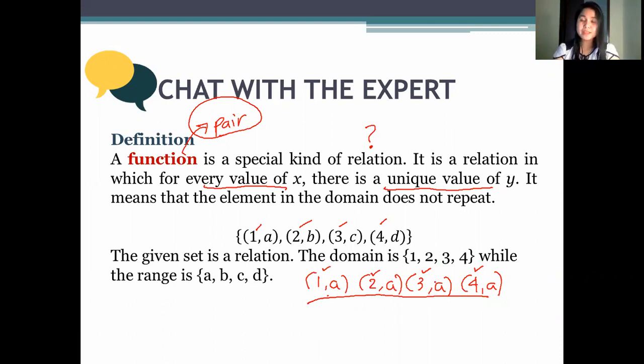But if the X coordinate repeats, like, for example, 1A, 1B, 1C. You look at our X coordinates: 1, 1, 1. So, the X coordinate is repeating. Therefore, this is not a function. It's a relation, but it's not a function.